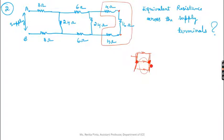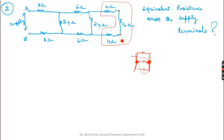If you take any two of the parallel resistors, you can see they have two common points — that means they are in parallel. Based on this, you can analyze whether resistances are in series or in parallel.